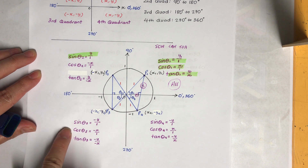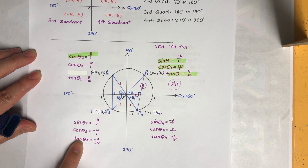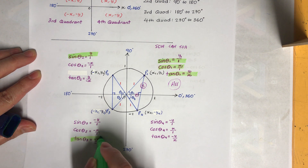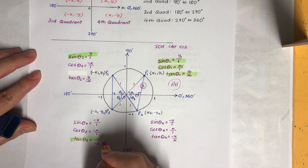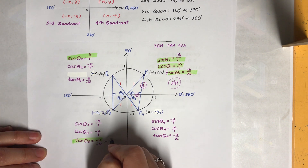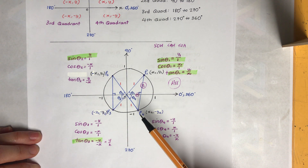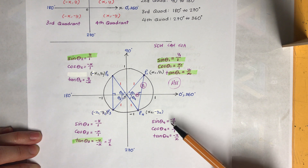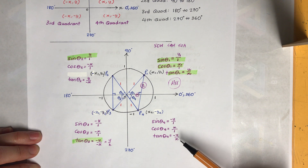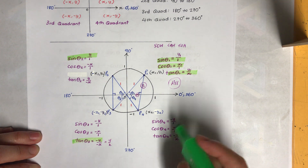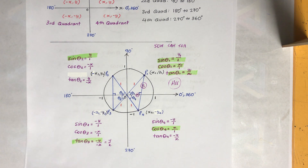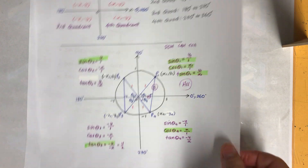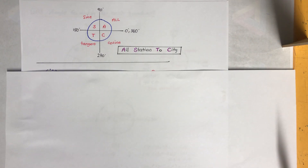In the third quadrant, both coordinates are negative, so sine and cos will definitely be negative. But tan is rise over run, which is y over x — negative divided by negative is positive. So tangent is positive in the third quadrant. In the fourth quadrant, only the y-coordinate is negative, so sine and tan are negative, while cosine is positive.